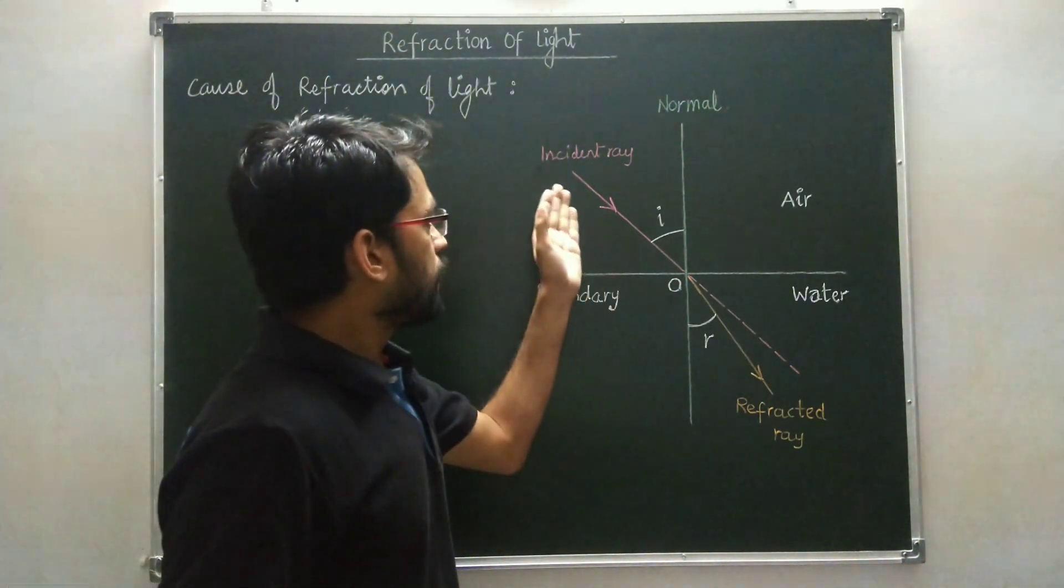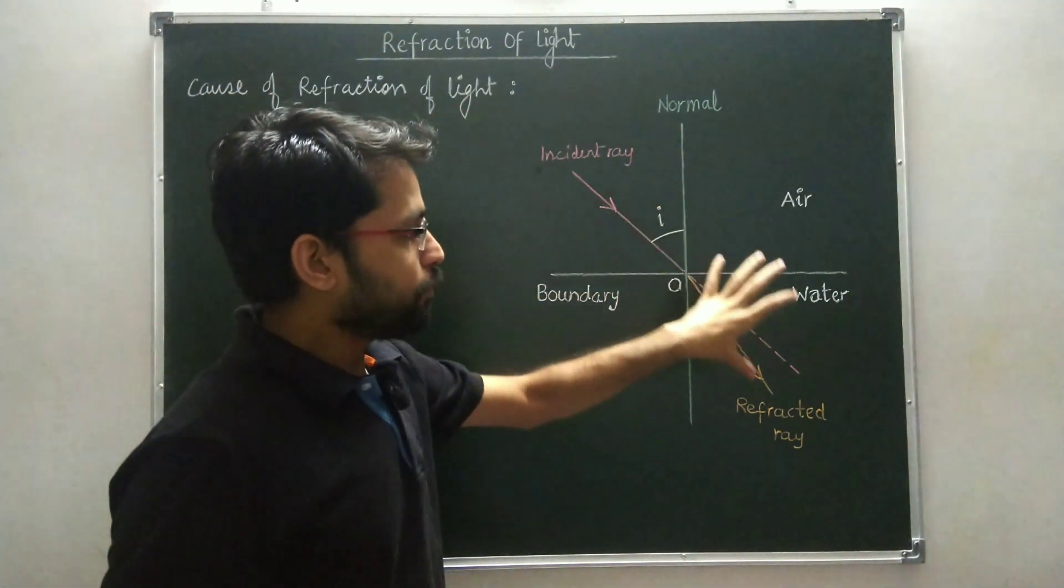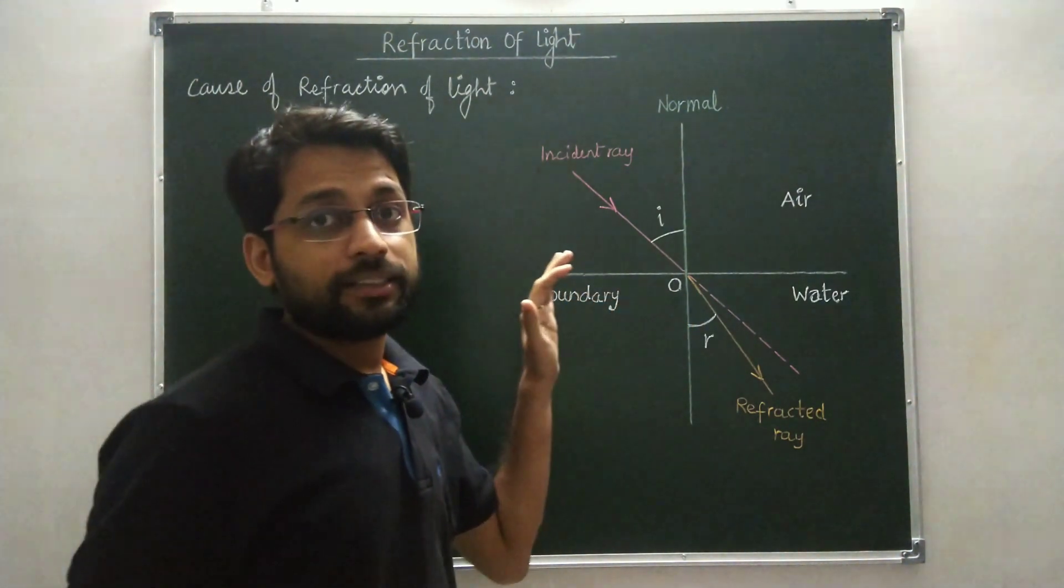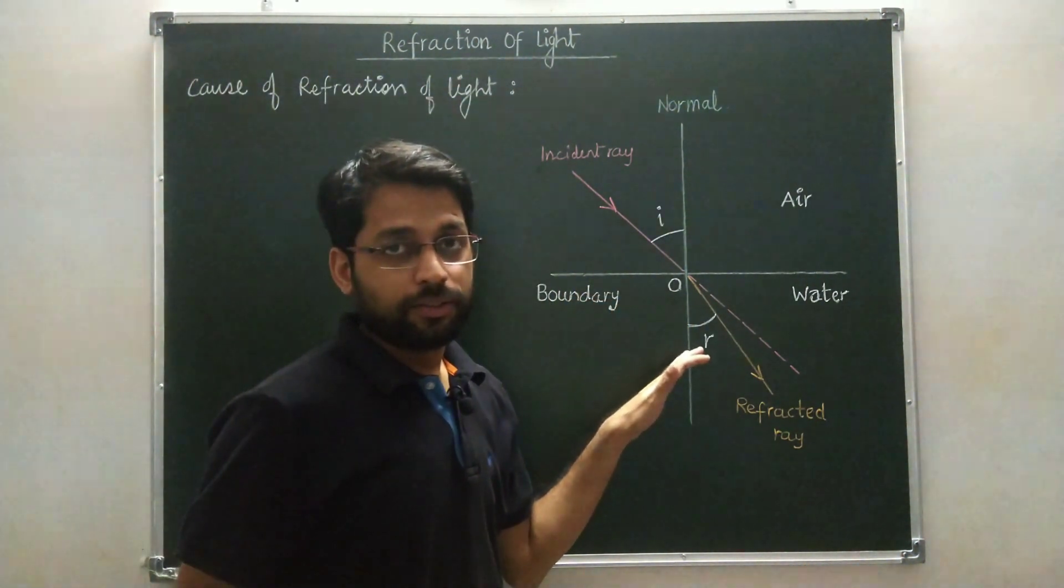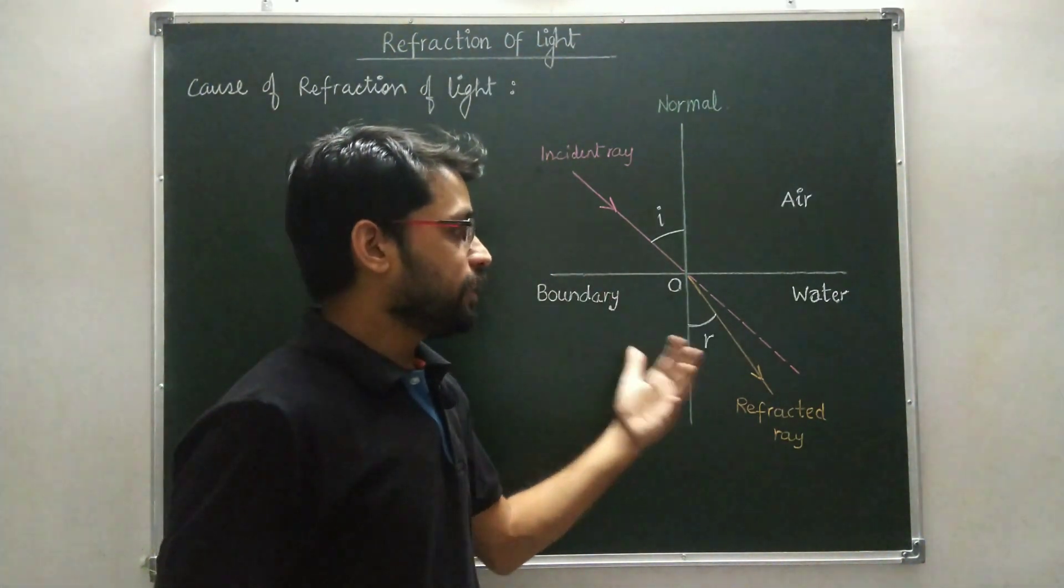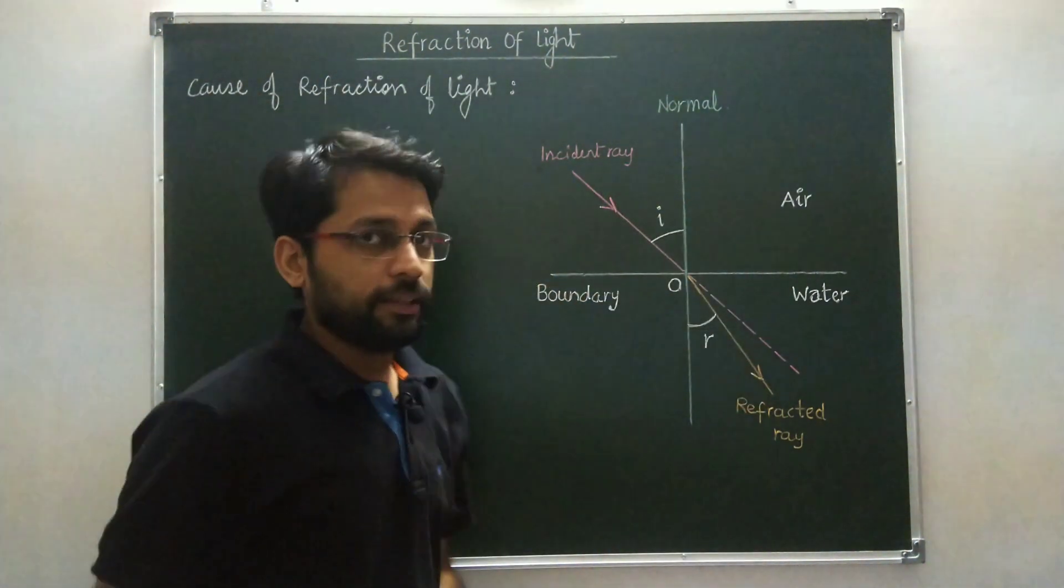When a light ray enters from one transparent medium to another, its speed changes. It means its speed may increase or decrease depending upon the nature of the medium.